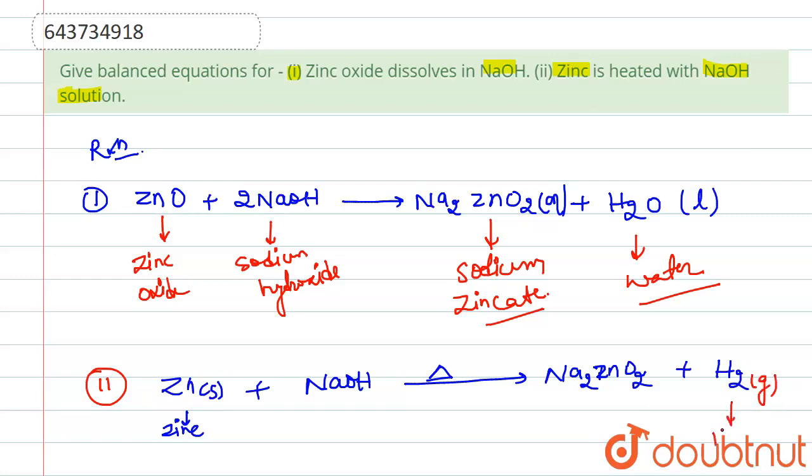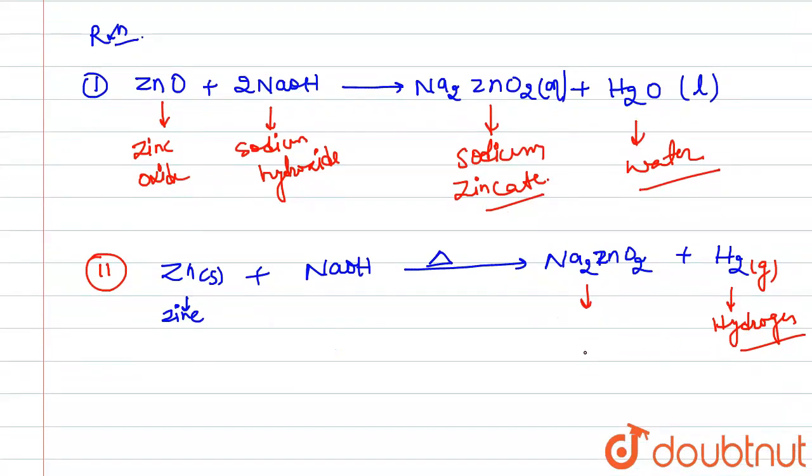If we talk about this equation, we have hydrogen gas here. In this case there will also be formation of sodium zincate, but due to unavailability of oxide which is responsible for formation of water